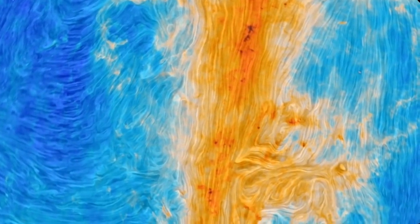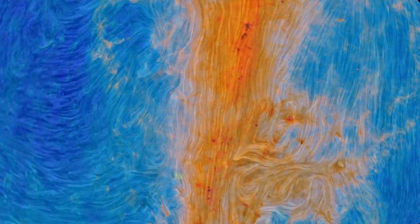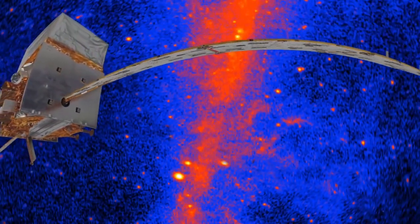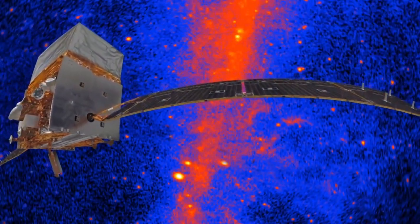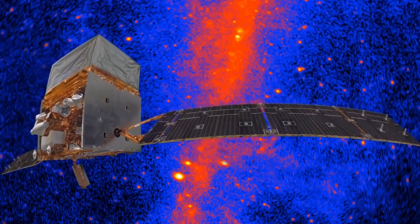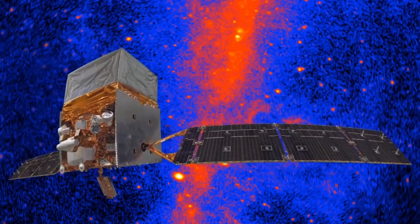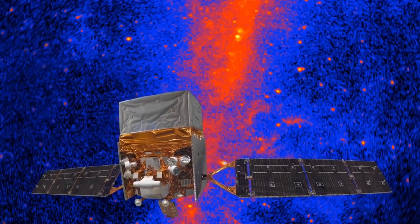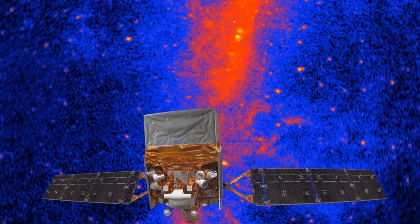Our galaxy also looks very different in gamma rays, the most energetic part of the spectrum. Orbiting gamma ray observatories like Fermi can pinpoint the most energetic light sources in the universe. These are often collapsed stars with tightly wound magnetic fields focusing the light they emit.